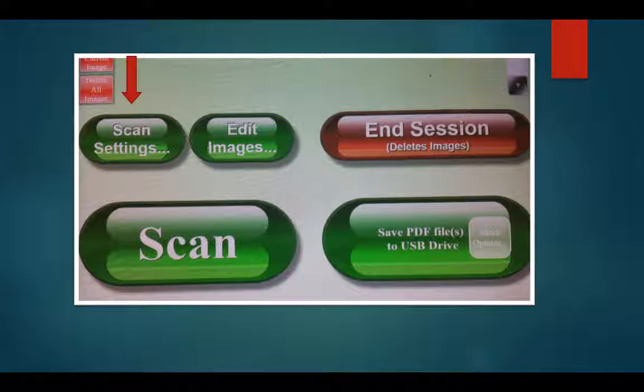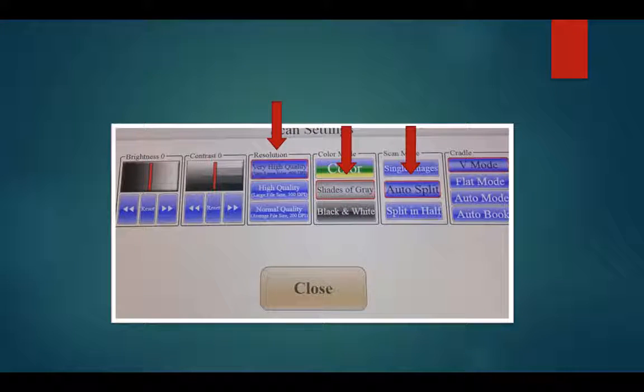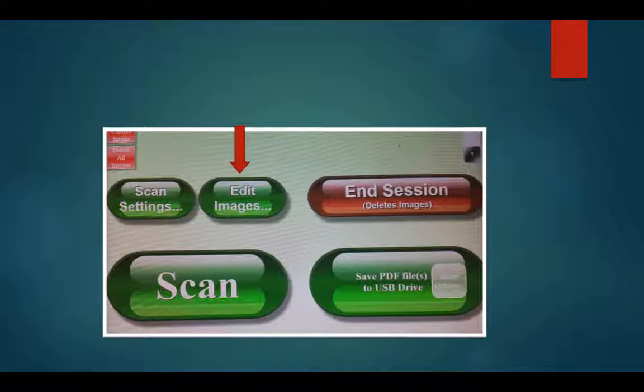After all the pages have been copied, select Scan Settings. For readable, searchable material, select Very High Quality, 600 DPI Resolution, Shades of Gray Color Mode, and Auto Split Scan Mode if you decide to copy two pages at one time. Select Close once your scan settings are created.